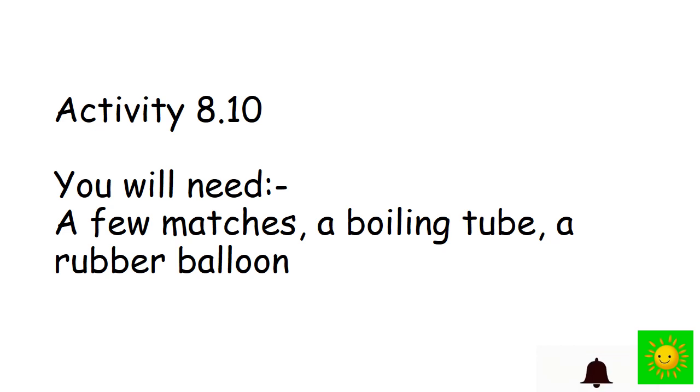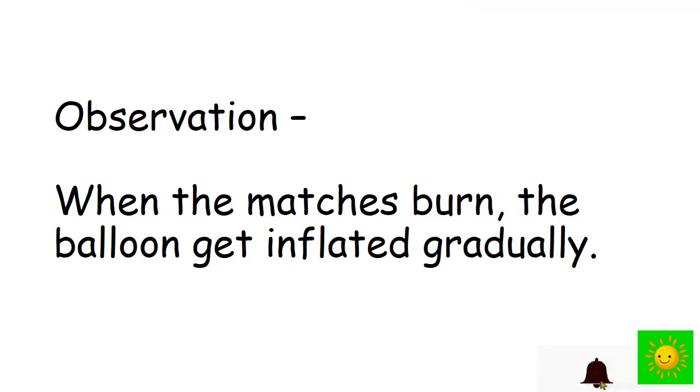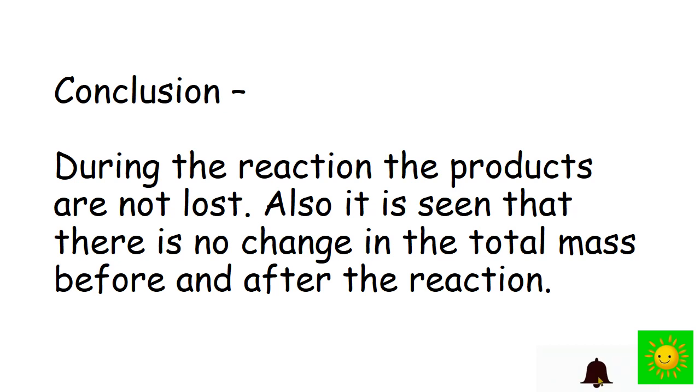We need a few matches, a boiling tube, and a rubber balloon. Now conduct this activity in a closed system. Close the mouth of the boiling tube containing matches with a barrel. Measure its mass. Apply heat close to the bottom of the tube until the matches light up. Allow the boiling tube to cool and weigh again. When the matches burn, the balloon gets inflated gradually. During the reaction, the products are not lost. It is seen that there is no change in the total mass before and after the reaction.